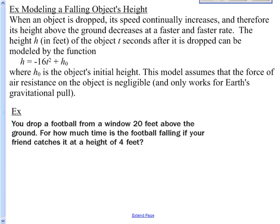Let's apply this to a real-life example: modeling the height of falling objects. The equation is h equals negative 16t squared plus h-sub-zero. This applies to any object falling on Earth, assuming air resistance is negligible. H-sub-zero is your initial height, t is your time in seconds, and h is the height of the object after t seconds.